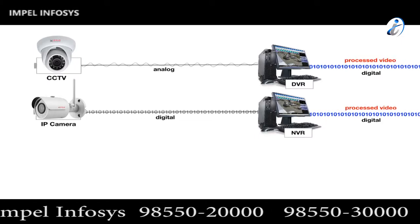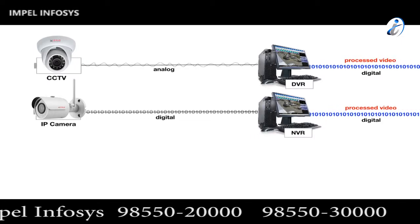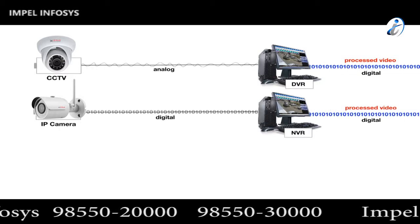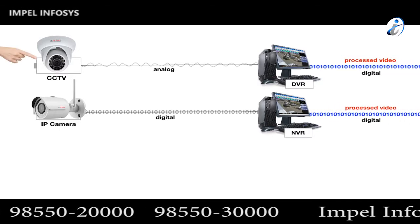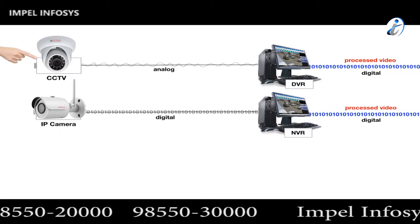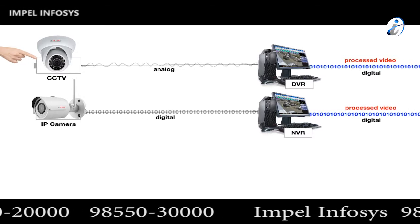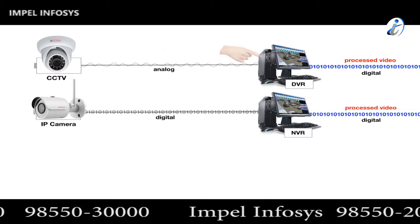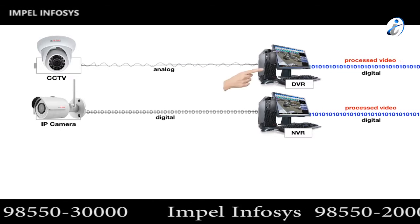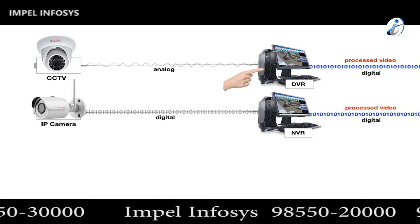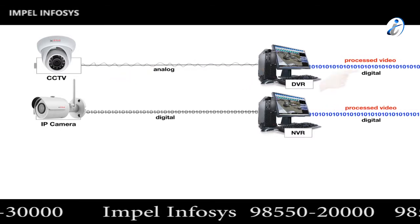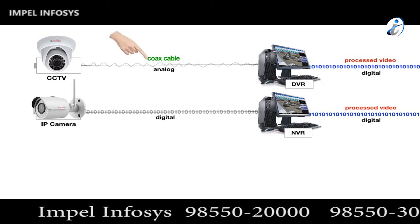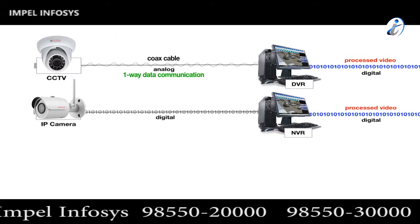Here we have a diagrammatic comparison to help give an idea of what an IP camera system is. The top diagram illustrates a typical CCTV system where analog video is streamed directly from the CCTV cameras to a central DVR. The digital video recorder converts the analog stream to digital video. Coaxial cable is used for the data delivery, which is only one way.